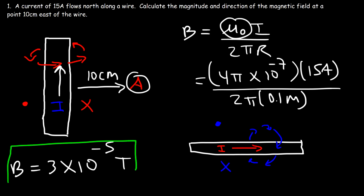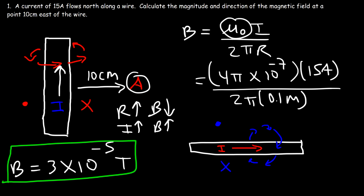The answer is 3 × 10⁻⁵ Tesla. As you move away from the wire, the strength of the magnetic field greatly decreases — as r increases, the magnetic field decreases. To increase the strength, you can move closer to the wire or increase the current. Increasing the current increases the strength proportionally: doubling the current doubles the magnetic field, tripling the current triples it. Doubling the distance reduces the magnetic field to one half of its original value; tripling the distance gives one third.